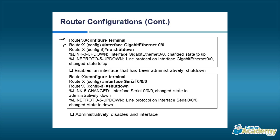Using the interface command to get into interface configuration mode, in this case we're going to get into gigabit Ethernet 0/0. Remember that by default, routers have all of their interfaces shut down — they're not designed to be turned on, different from a switch. With a switch, all interfaces are up by default, making it plug-and-play. Not so with the router. Shutdown is the command to turn an interface off, and if you want to undo a configuration, you put the word no in front of it — so no shutdown brings that interface physically up.